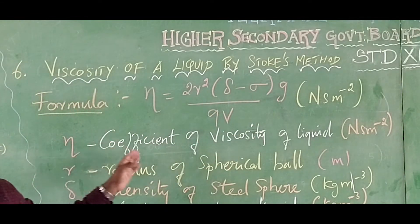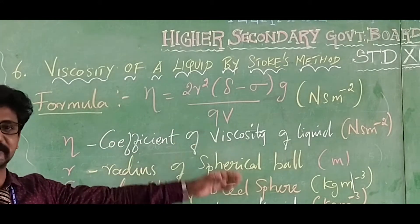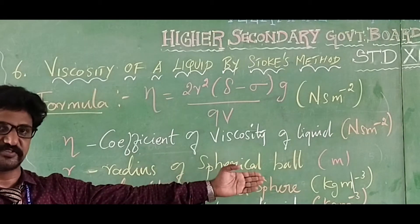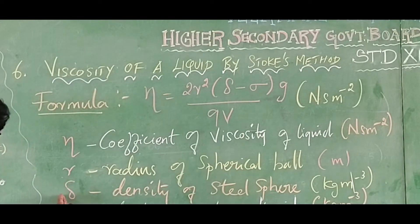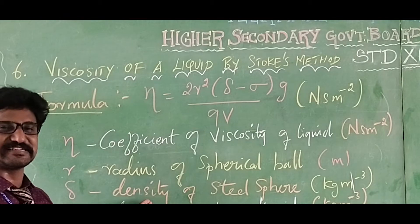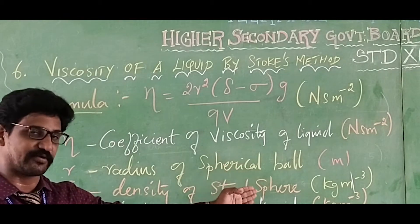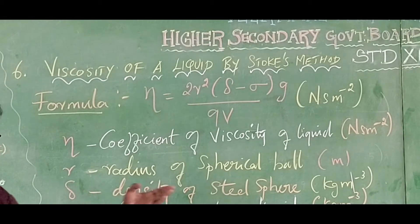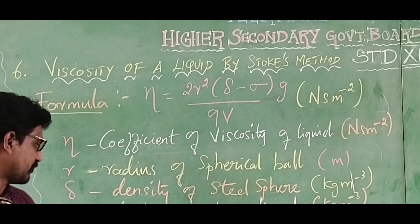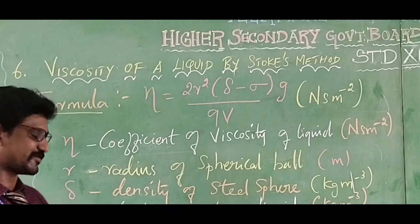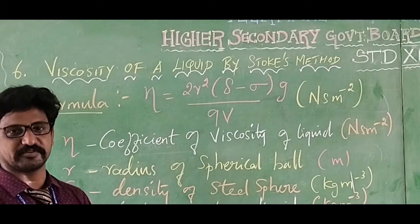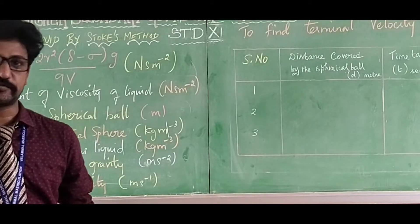Here eta is the coefficient of viscosity of the liquid, measured in Newton-seconds per meter square. r represents the radius of the steel ball, measured in meters. Rho represents the density of the steel sphere, measured in kilograms per meter cube. Sigma is the density of the liquid, measured in kilograms per meter cube. g is the acceleration due to gravity in meters per second square. v is the terminal velocity, measured in meters per second.